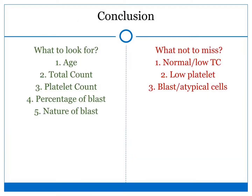As a conclusion of this approach, we have to know what to look for and what not to miss. The age, platelet count, and percentage of blasts will help us differentiate between acute and chronic leukemia. The total count will help us in differentiating sub-leukemic or aleukemic leukemia, and the nature of blast will help us in differentiating myeloid leukemia from lymphoid leukemia.